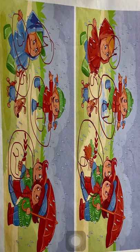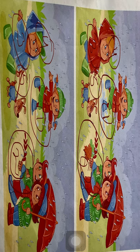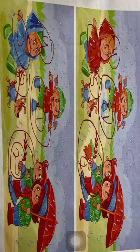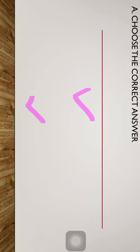The fourth difference: the boy who has the red coat has a cap in the second picture, but in the first picture there is no cap on the boy's head. The fifth difference: the dog has a rope around its neck in the first picture, but in the second picture there is no rope around the dog's neck. So these are the five differences.